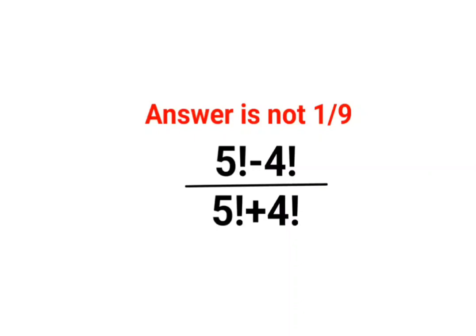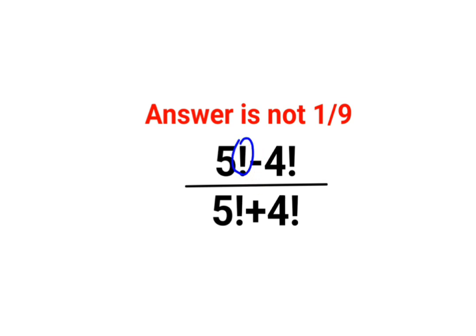Welcome everyone. A lot of people thought that the answer for this one was supposed to be 1 upon 9, because 5 minus 4 is 1 and 5 plus 4 is 9. But one very crucial important thing which a lot of people missed out was that we have an exclamation mark. Now what does this exclamation mark stand for in mathematics? An exclamation mark ahead of a number means we need to find the factorial of that number.